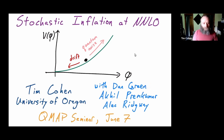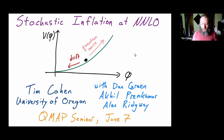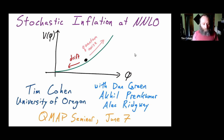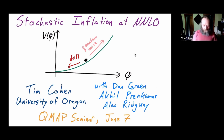These two folks are in Dan's group at UCSD. Akhil is Dan's student — he is truly phenomenal and going to be on the market this fall, so definitely keep an eye out for him. He's a field theorist with broad interests. I'll mention a really heroic calculation that he did that he's going to be writing up in a complementary paper. Alec Ridgway, who's also great, is a postdoc in Dan's group at UCSD.